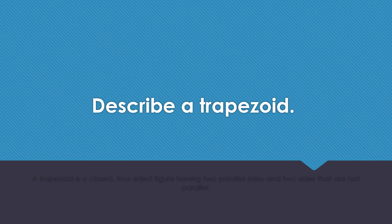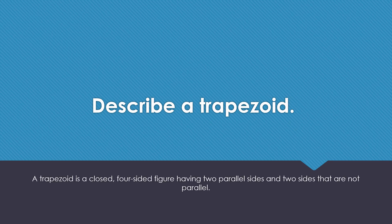Describe a trapezoid. A trapezoid is a closed, four-sided figure having two parallel sides and two sides that are not parallel.